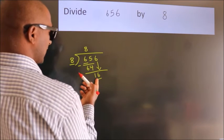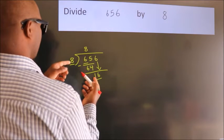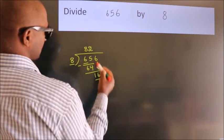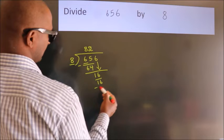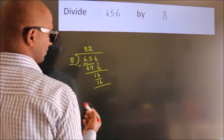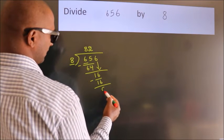When do we get 16? In the 8 table. 8 twos, 16. Now, we subtract. We get 0.